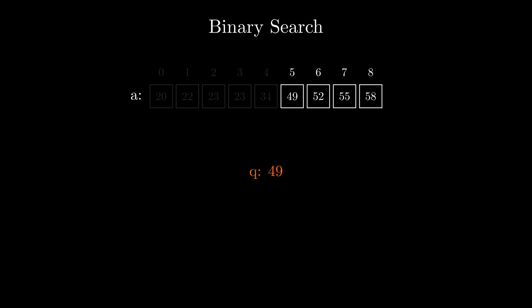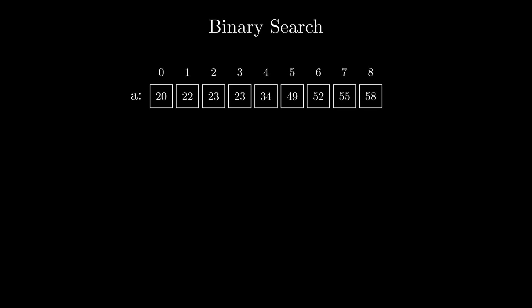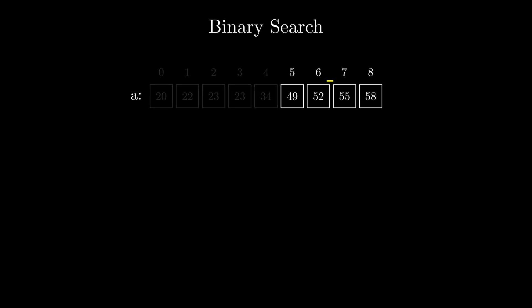We will then compare the query number to the middle element of the remaining array. If the middle element is larger than the query number, we will throw away the whole right part of the array. We continue that process until there is only a single element left. That way we will find the element we were searching for. So what we just did here is the binary search algorithm — the core idea is that we can split the search space on every iteration and throw away the part that cannot contain what we're looking for.